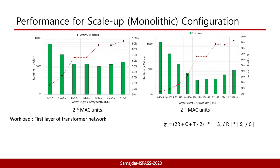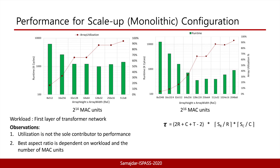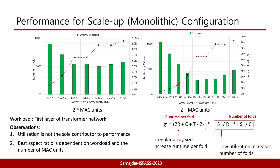In this slide we dive deep into performance for monolithic configurations. The figure on the left shows the variation of runtime and array utilization for 2^14 MACs when the first layer of the transformer network is run, while the figure on the right captures the same for 2^16 MAC units. We notice that the highest-performance configuration is not the one with the best utilization, and this configuration varies with the number of MAC units for a given workload. This trend can be explained by the counterbalancing of runtime per fold and the number of folds from our analytical model. Configurations with highest utilization are usually highly irregular, leading to large runtime, while those with low utilization increase the number of folds. The sweet spot is an array configuration with conservative utilization, leading to lower folds and lower per-fold runtime.